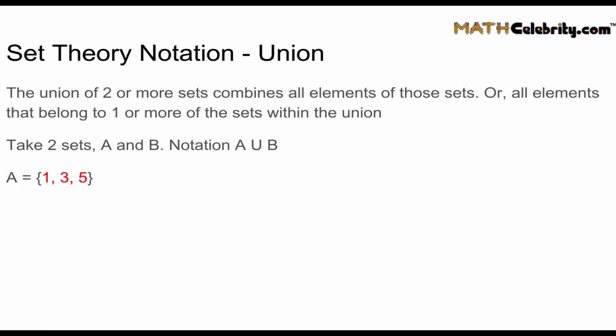Let's say set A is the numbers one, three, and five. And set B is the numbers two, four, and six. So what we want to do is build A union B. And A union B is one, two, three, four, five, six. Notice I've color-coded the elements. So one, three, five was in A, two, four, six was in B. The union is all the elements from all the sets within the union.